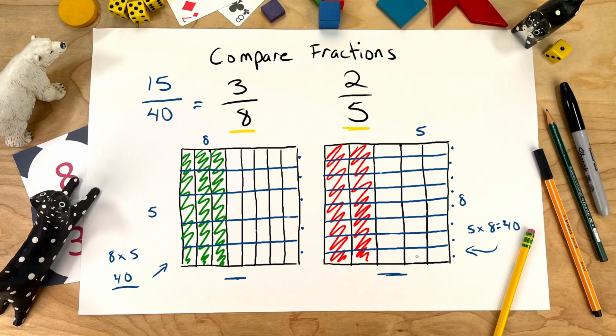And, what do we have on the other side here? We know we have 40 spaces now. How many are colored in? 1, 2, 3, 4, 5, 6, 7, 8, 9, 10, 11, 12, 13, 14, 15, 16. 2 fifths is the same as 16 fortieths.